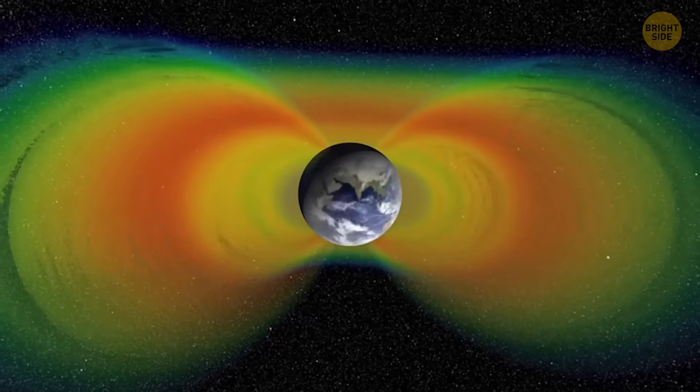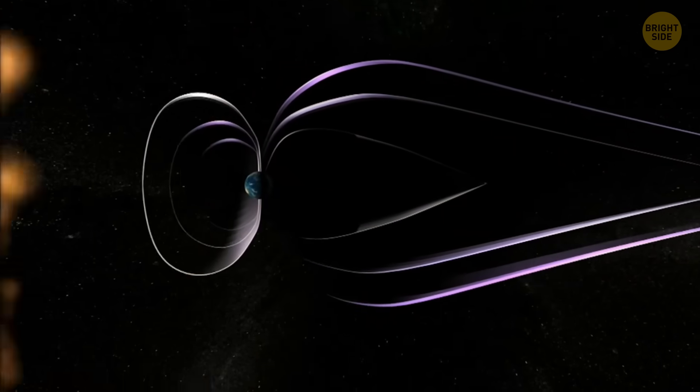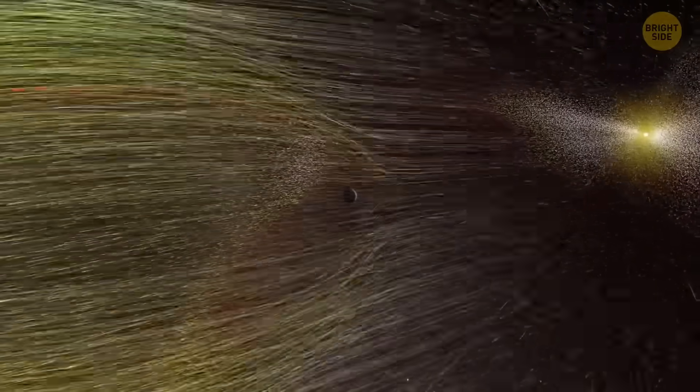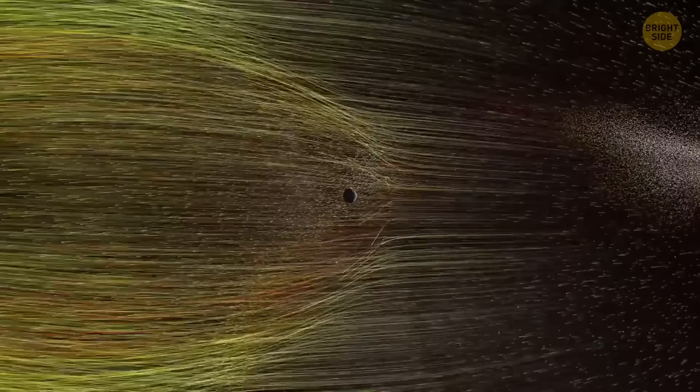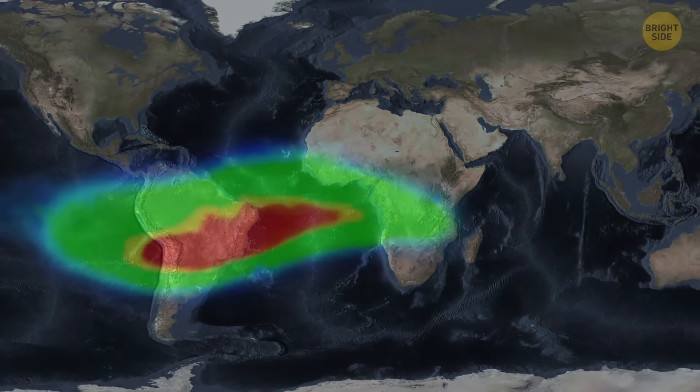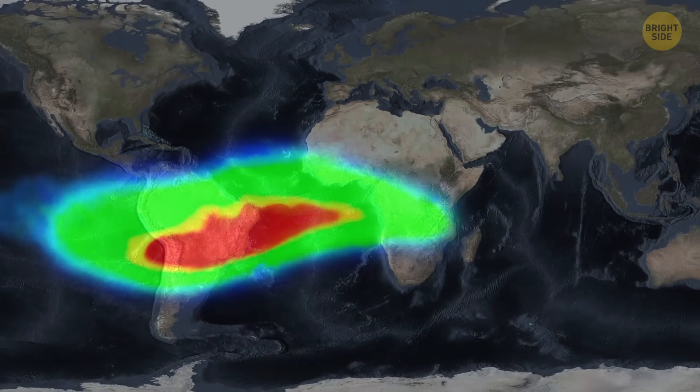Earth has a magnetic field that protects us from dangerous radiation from the sun. We'll talk about it later. And over one spot on the planet right above the South Atlantic Ocean, that shield gets weirdly weak. It stretches over South America and parts of Africa, creating a sort of magnetic soft spot.